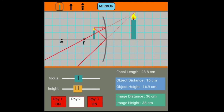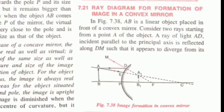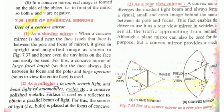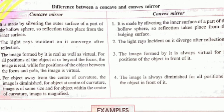Now we will study the ray diagrams for image formation in a convex mirror. The first case is when the object is at infinity — the image will always be at the focus, diminished, and upright. The second case is when the object is at any other position — the image will be between the focus and the pole, upright, and diminished, because in a convex mirror the reflected rays go back and dotted lines are drawn.